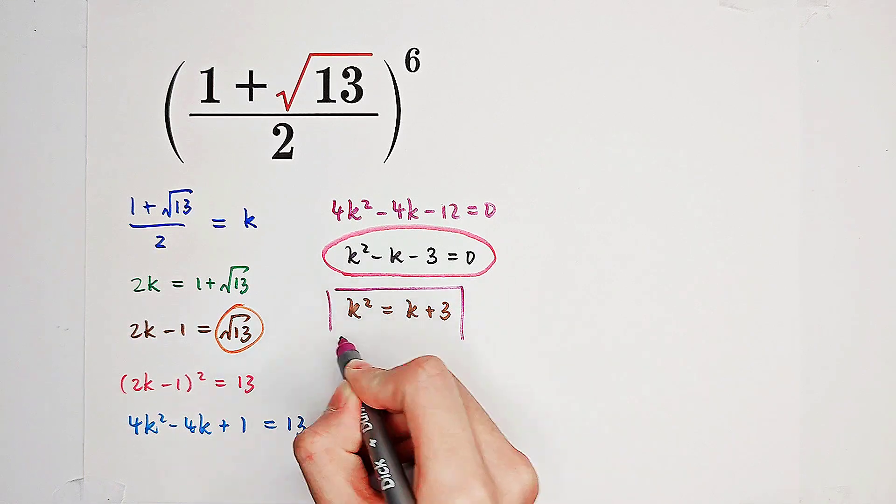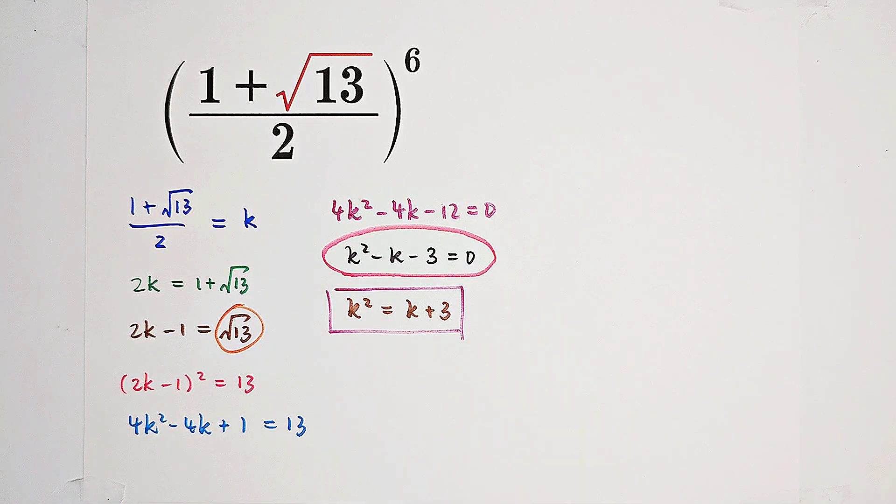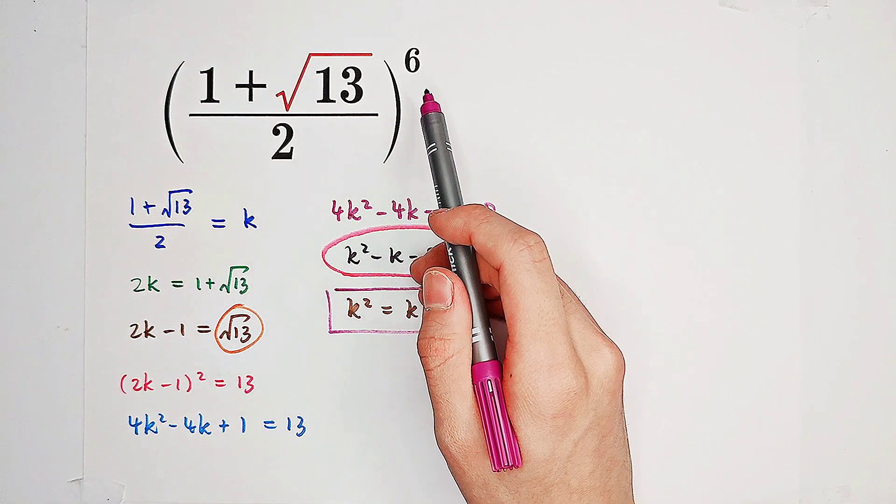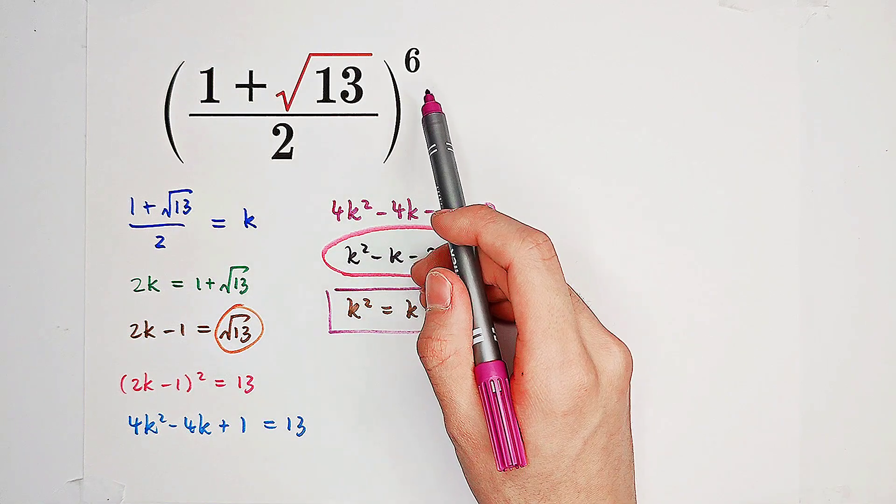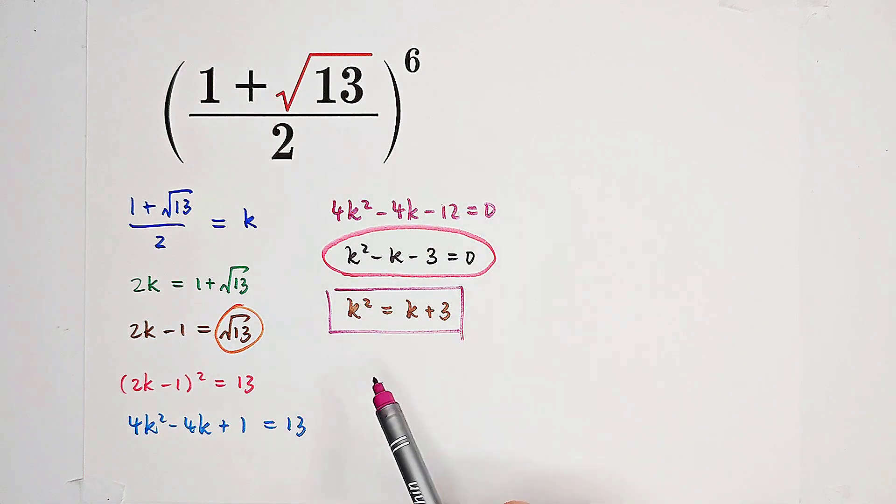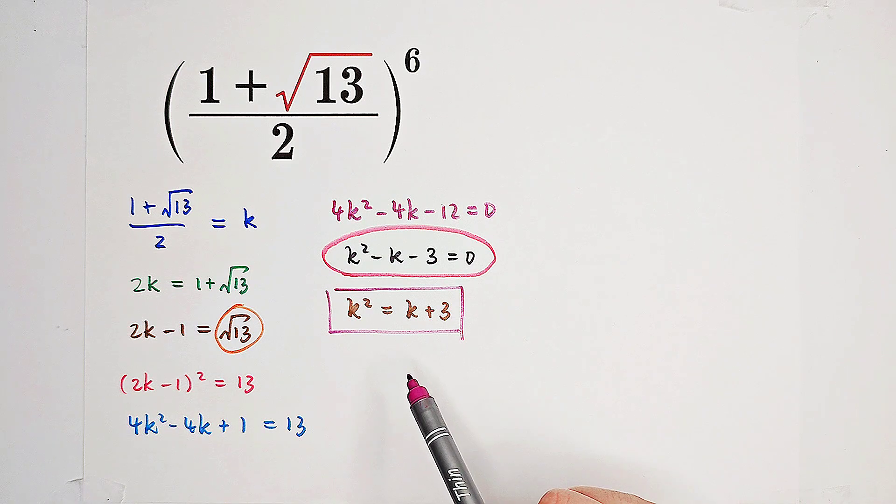Just using this equation, approaching our exponent 6. Because we have k squared equals k plus 3. The left-hand side is quadratic, while the right-hand side is linear.